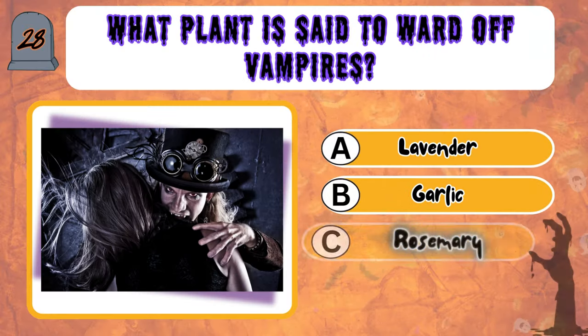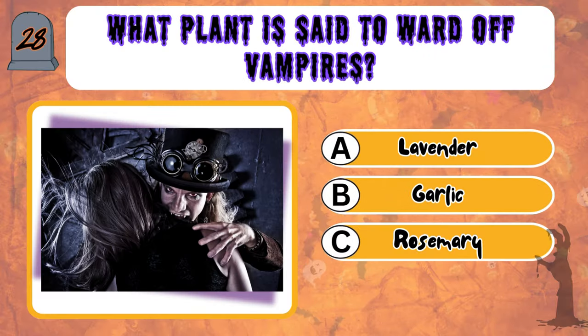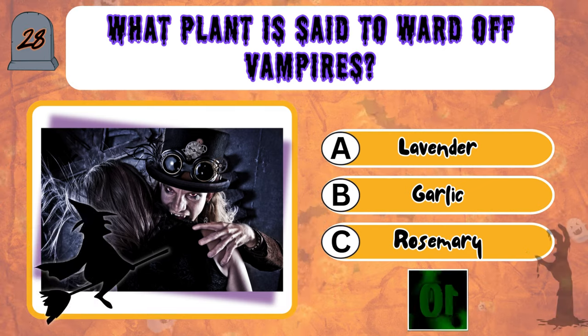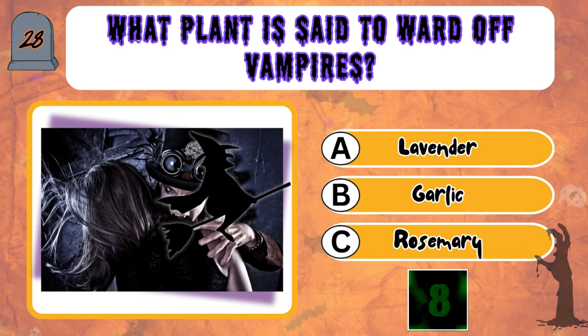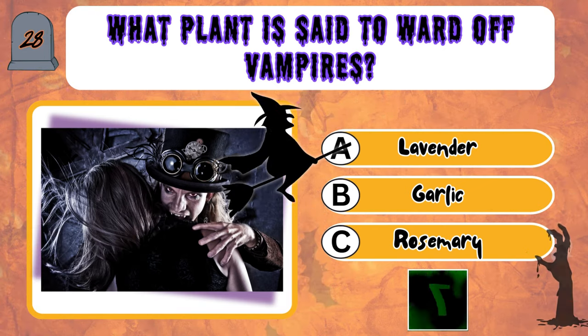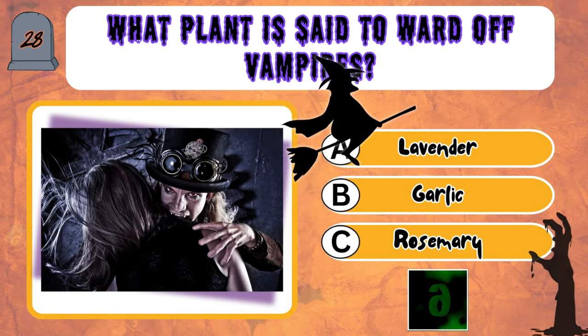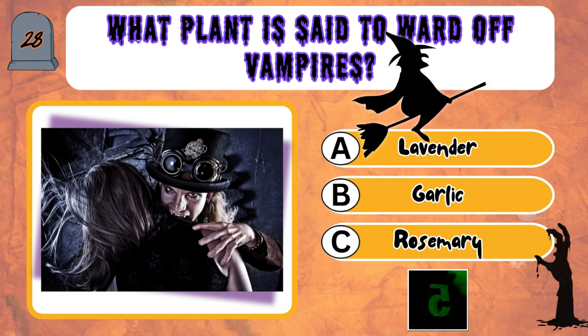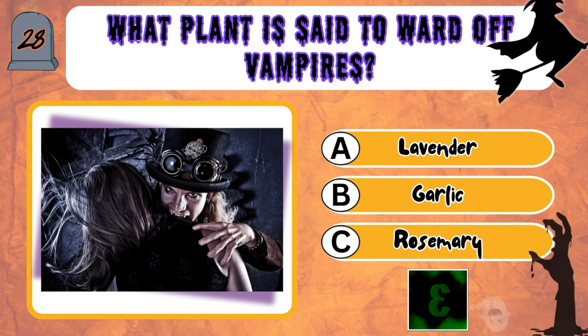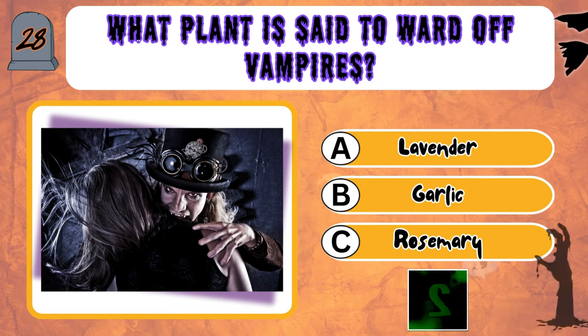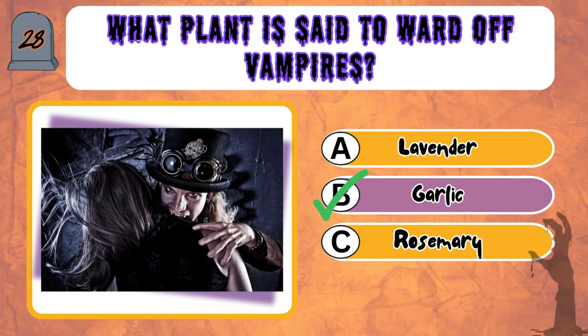What plant is said to ward off vampires? A, Lavender. B, Garlic. Or C, Rosemary. It's B, Garlic.